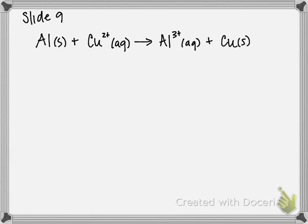Step 1 is to figure out the oxidation states. Anything in its normal state at room temperature has an oxidation state of zero — so aluminum solid has an oxidation state of zero. Cu²⁺ is already written for us; if not paired with anything else, the oxidation state equals the charge of the ion, so it's +2. Al³⁺ has an oxidation state of +3, and copper solid, found at room temperature, also has an oxidation state of zero.